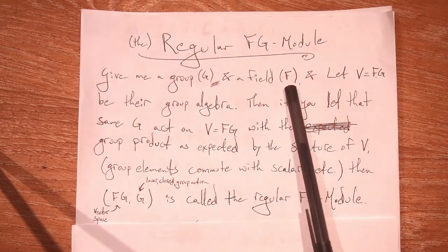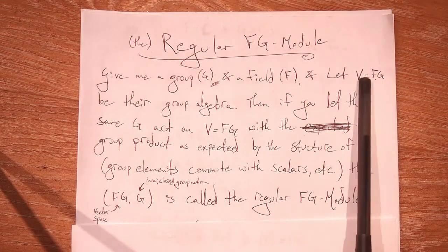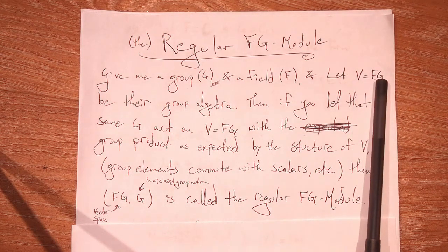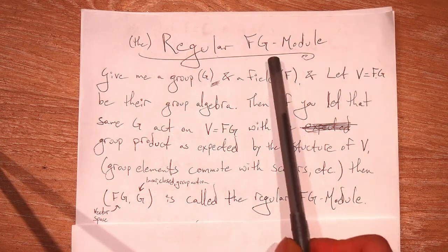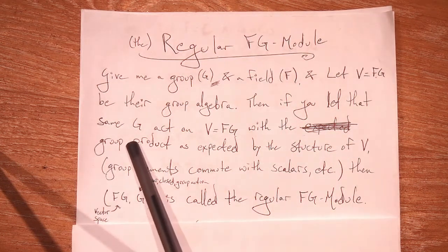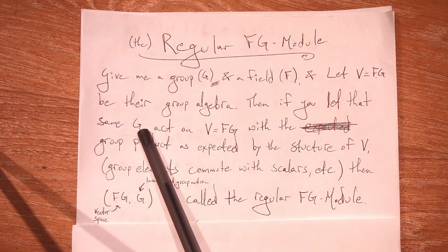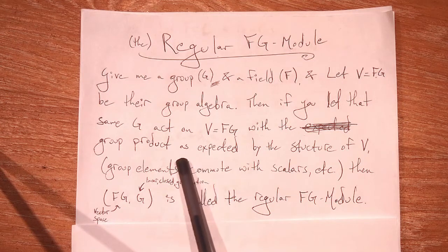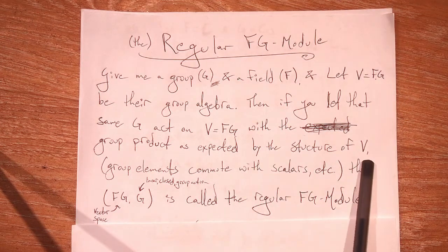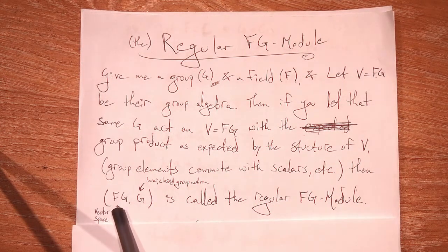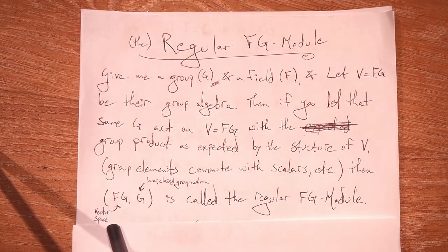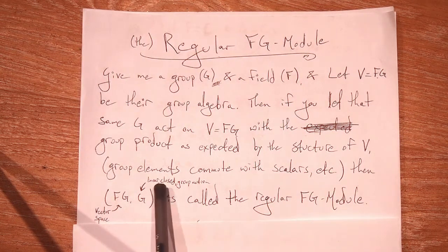So like I was saying, you give me a group and some field, usually R or C, and then we let our vector space be the group algebra FG. This is a vector space with a product, but for an FG module we just need a vector space. Then if you let that G act on the vector space FG with a group product exactly as expected by the structure of V, we have group elements commuting with scalars, etc. Then FG comma G is called the regular FG module.